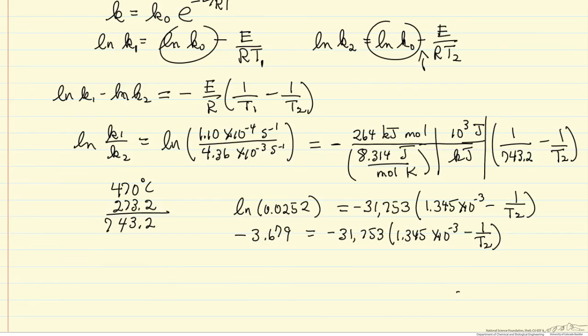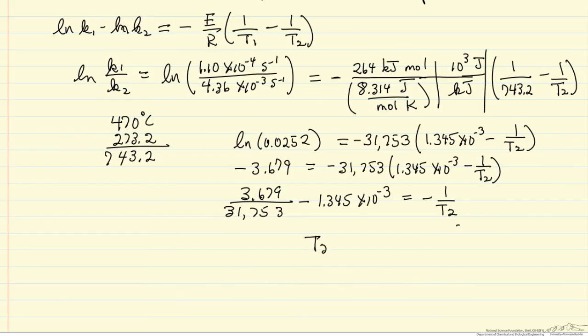I would solve by first doing this division. Then I could bring this to the other side, 1.345 times 10 to the minus 3, and that equals minus 1 over T2. So I can now solve for T2, which is going to be in Kelvin.